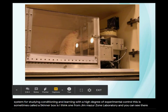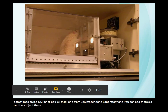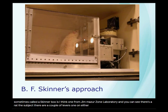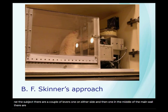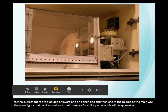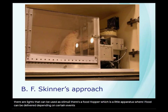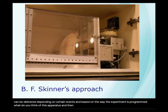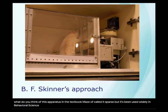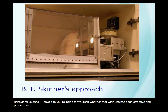You can see there's a rat — the subject — and a couple of levers, one on either side and one in the middle of the main wall. There are lights that can be used as stimuli, and a food hopper where food can be delivered depending on certain events and based on how the experiment is programmed. What do you think of this apparatus? In the textbook, Mazur called it sparse, but it's been used widely in behavioral science. I'll leave it to you to judge for yourself whether that wide use has been effective and productive at the end of the semester.